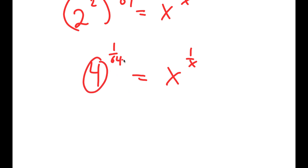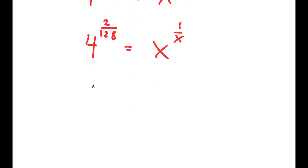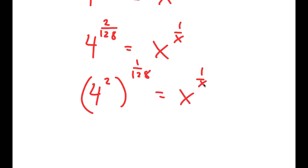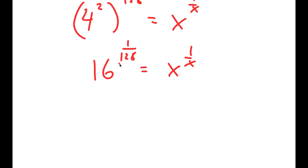These two numbers still aren't the same, so we're going to repeat the process. 1 over 64 is the same as 2 over 128, so I can rewrite this as 4 squared to the power of 1 over 128. Now 4 squared is 16, so I get 16 to the power of 1 over 128 is equal to x to the power of 1 over x — and they still aren't the same.